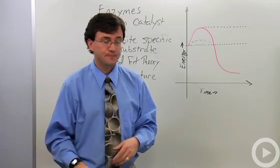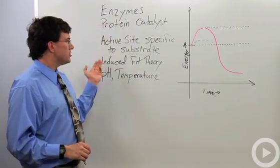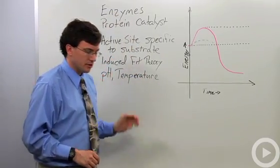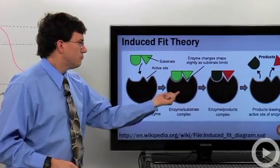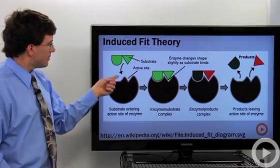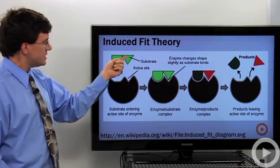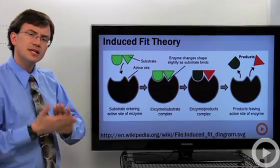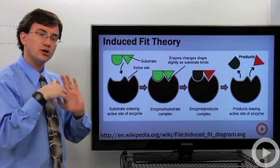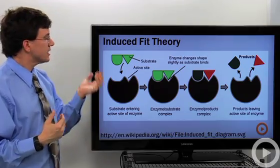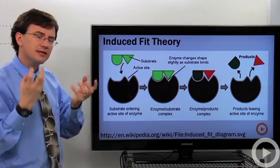Now, the way they do this is something called the induced fit theory. If we take a look at this diagram, you can see the grayish blob here is the enzyme, and this part here is the active site. You can see it kind of fits, but it doesn't perfectly fit. It used to be thought that it did, and that was called the lock and key hypothesis.